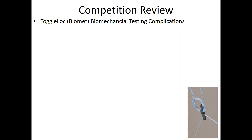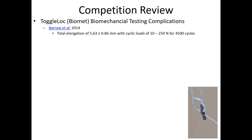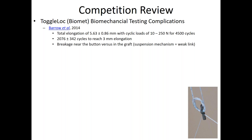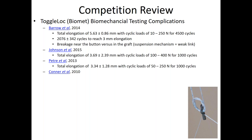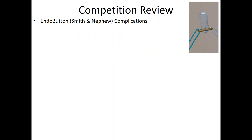Let's look at the toggle lock system — not so different from the tightrope. Results by Barrow et al. show that anything over 3 millimeters is considered a clinical failure in the literature. Again, clinical failure is shown at very low loads and very low cycles — it took just over 2,000 cycles to reach that point. The weak link here is again the suspension mechanism. Johnson et al. reported a clinical failure with a mean of just under 3.7 millimeters at very low loads and very low cycles. Similar results were reported by Petri, by Conner, and others.